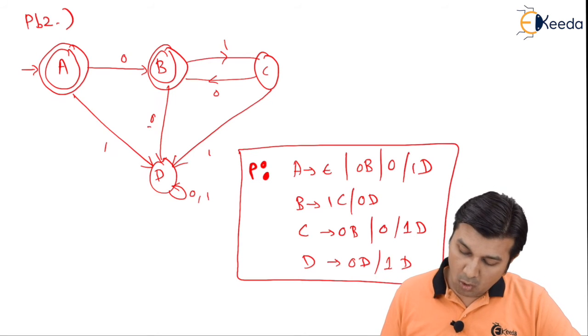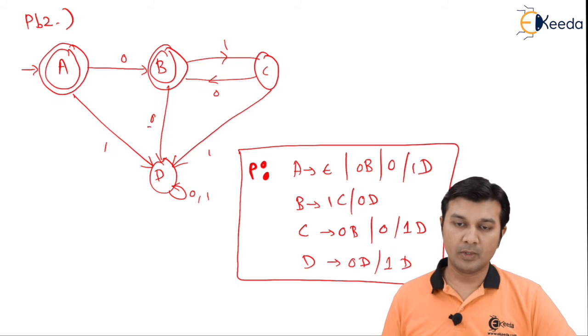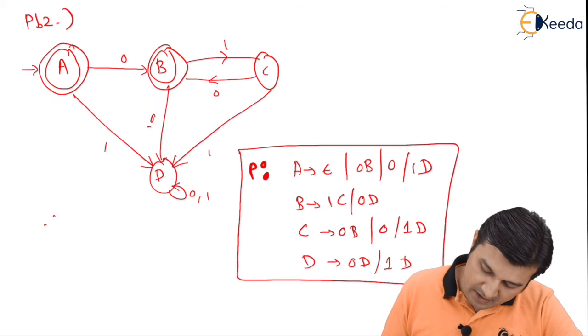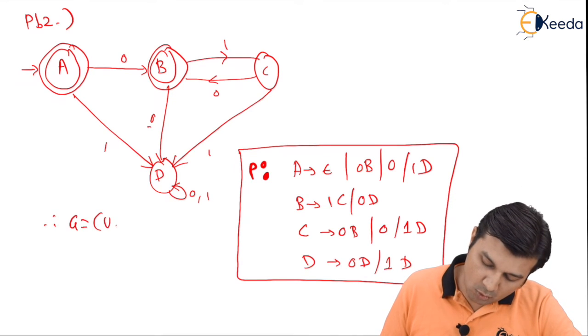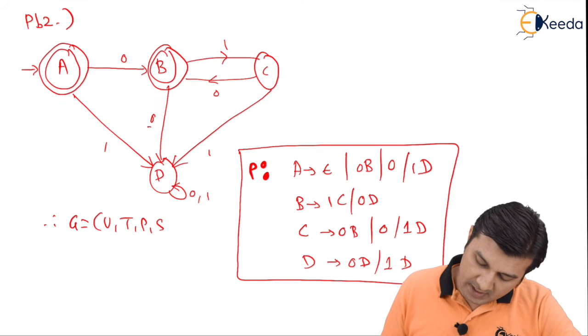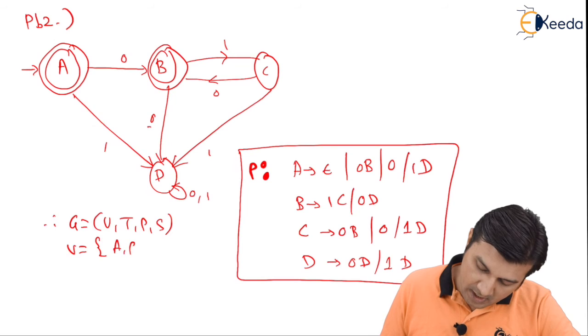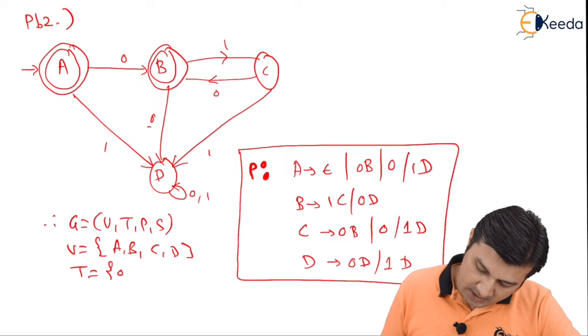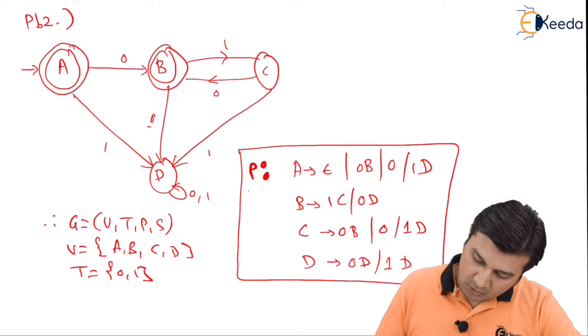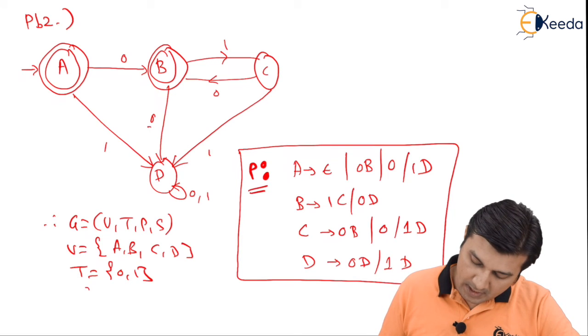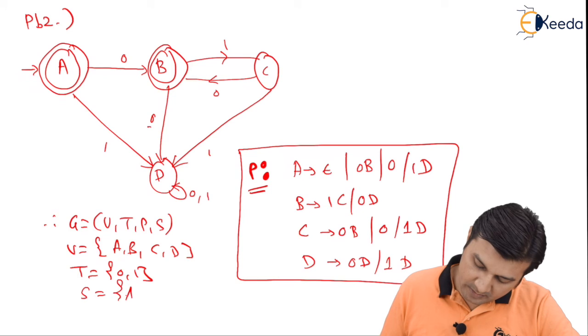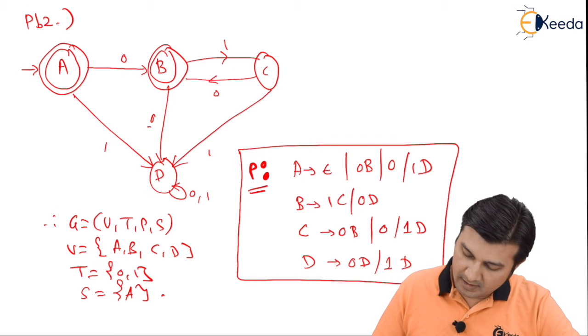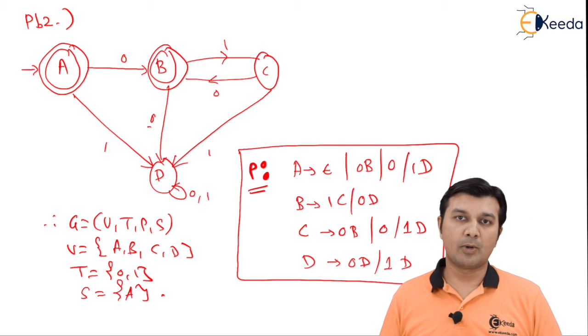That completes the production rules for this particular DFA, and these production rules are all in the right linear form. Therefore, now we can say G is equal to V, T, P, S, where my variables are A, B, C, and D, my terminals are 0 and 1, production rules are stated here, and my start state is A.